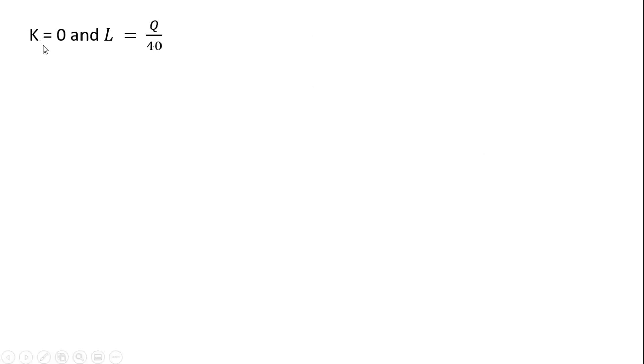As we mentioned, K equals 0, and L equals Q divided by 40. The firm's total cost can be thought of as wage times units of labor, plus the price of capital times units of capital. Substituting in $20 for the wage, and then substituting in for L, Q divided by 40, we get this. R was $10, and K is 0. So now just simplifying the right-hand side, we have the firm's total cost equation, C equals Q divided by 2.